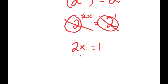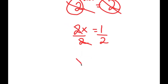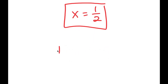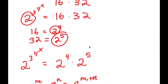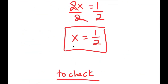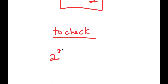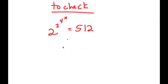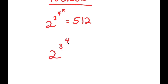If I divide both sides by 2, I get x is equal to 1 half. To check, my original equation was 2 to the power of 3 to the power of 4 to the power of x is equal to 512. Substituting x equal to 1 half, I have 2 to the power of 3 to the power of 4 to the power of 1 half is equal to 512.